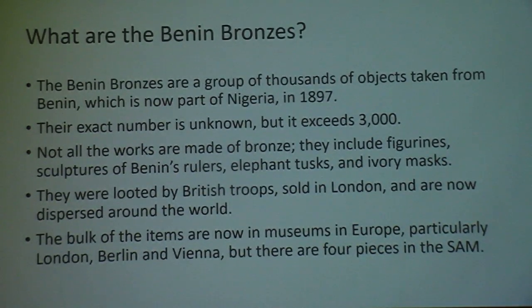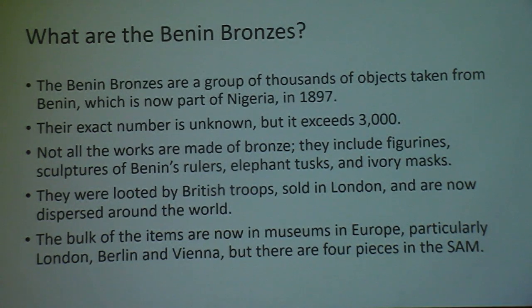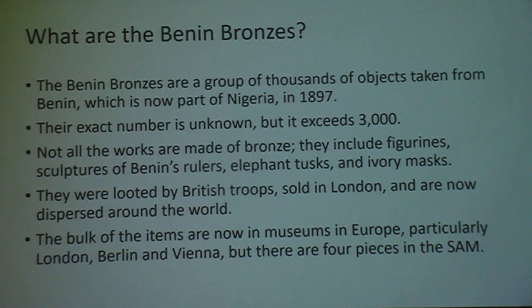The term 'Benin bronzes' is used for a group of thousands of objects taken from Benin — now part of Nigeria — in 1897. The exact number of pieces is unknown but exceeds 3,000. They include figurines, sculptures of Benin's rulers, elephant tusks, and ivory masks. They were looted by British troops, sold in London, and are now dispersed around the world. The bulk are now in museums in Europe, particularly the British Museum in London, the ethnographic museum in Berlin, and the ethnographic museum in Vienna. There are four pieces in the Seattle Art Museum, part of the Katherine White collection.